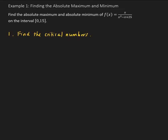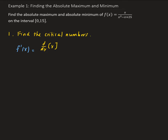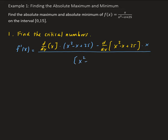Since our function is a rational function, we need to apply the quotient rule. So f prime of x equals the derivative of the top times the bottom, minus the derivative of the bottom times the top, all divided by the denominator squared — so x squared minus x plus 25, squared.